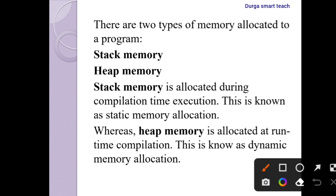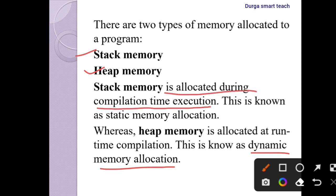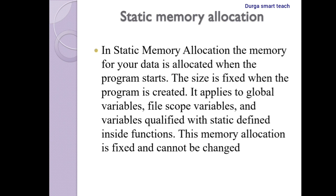There are two types of memory allocation in C: one is stack memory and another one is heap memory. Stack memory is also known as static memory allocation, and heap memory is also known as dynamic memory allocation. Static memory is allocated during compilation time, whereas memory allocated at runtime is known as dynamic memory allocation. In this video I am going to discuss only static memory allocation; in the next video I will explain dynamic memory allocation.